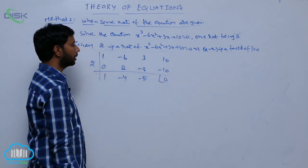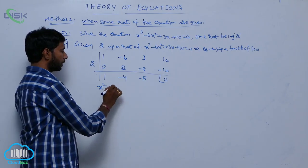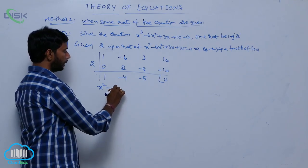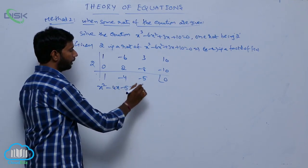Therefore, the coefficient is x² - 4x - 5 = 0.